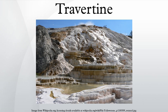Travertine forms from geothermal springs and is often linked to siliceous systems that form siliceous sinter. Macrophytes, bryophytes, algae, cyanobacteria, and other organisms often colonize the surface of travertine and are preserved, giving travertine its distinctive porosity.